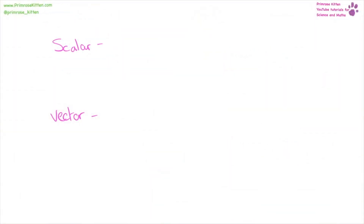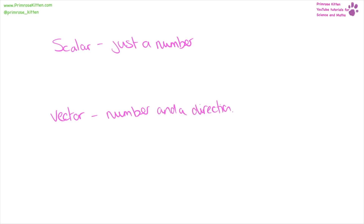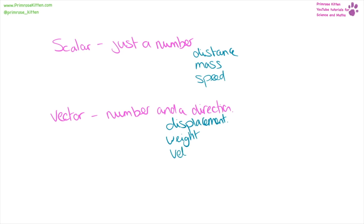A scalar quantity is just a number, and a vector quantity is a number and a direction. For example, distance is scalar but displacement is vector because it's distance in a direction. Mass is scalar but weight is vector. Speed is scalar but velocity, which is speed in a certain direction, is vector. Acceleration and force are both vector, and momentum is also vector.